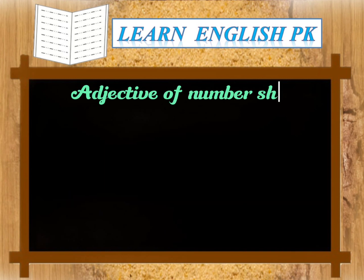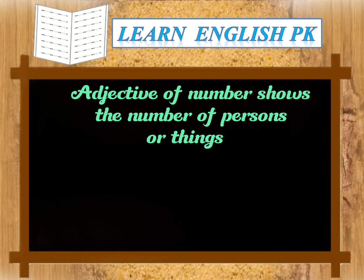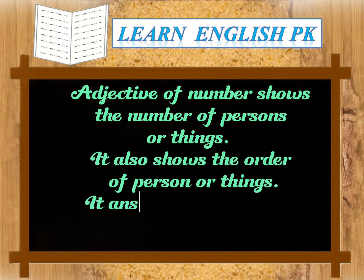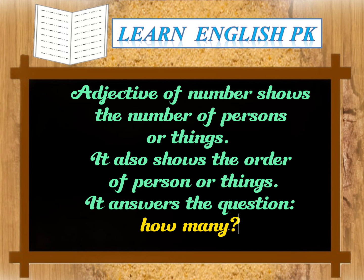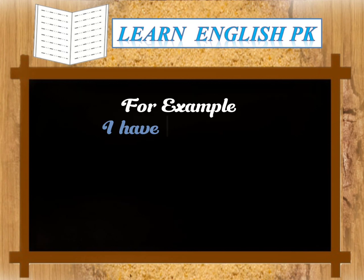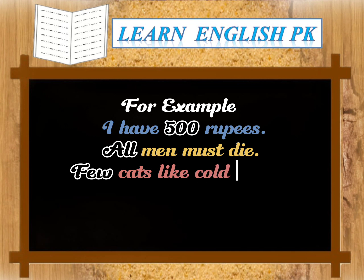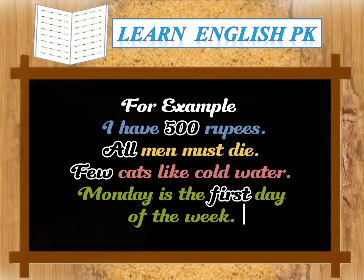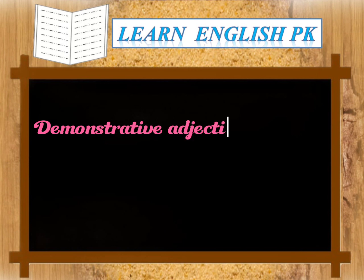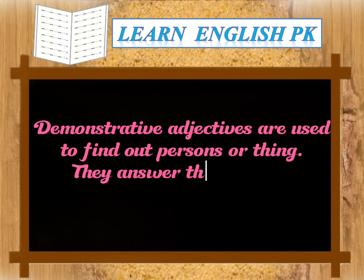Adjective of number shows the number of persons or things. It also shows the order of persons or things, and it answers the question 'how many?' For example: I have 500 rupees. All men must die. Few cats like cold water. Monday is the first day of the week.